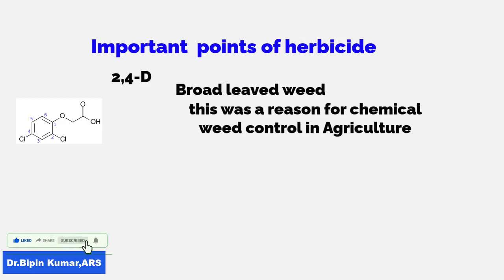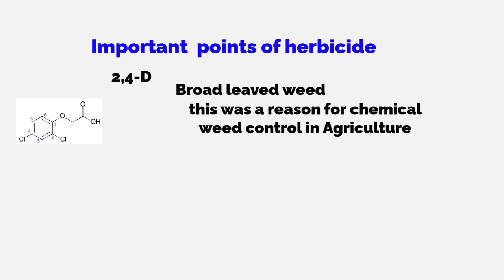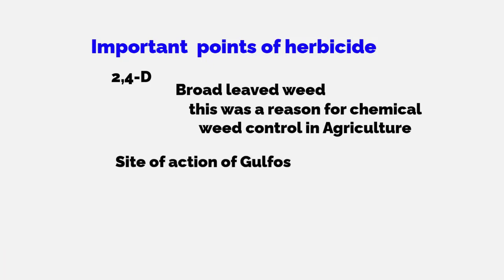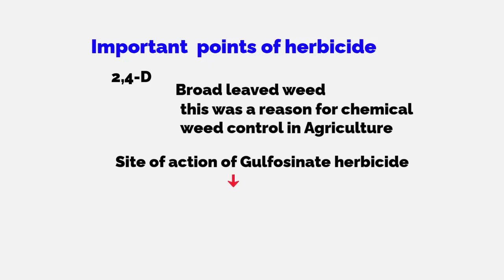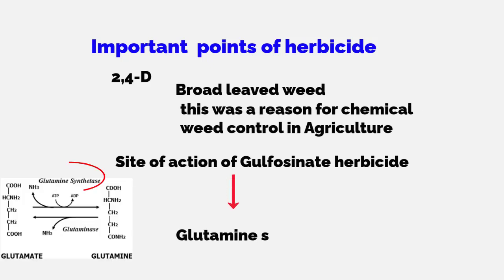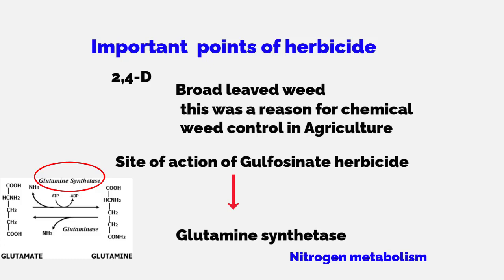Regarding the site of action of glufosinate herbicide, glufosinate inhibits glutamine synthetase. This glutamine synthetase enzyme is very much required for nitrogen metabolism and plays a very important role in it.